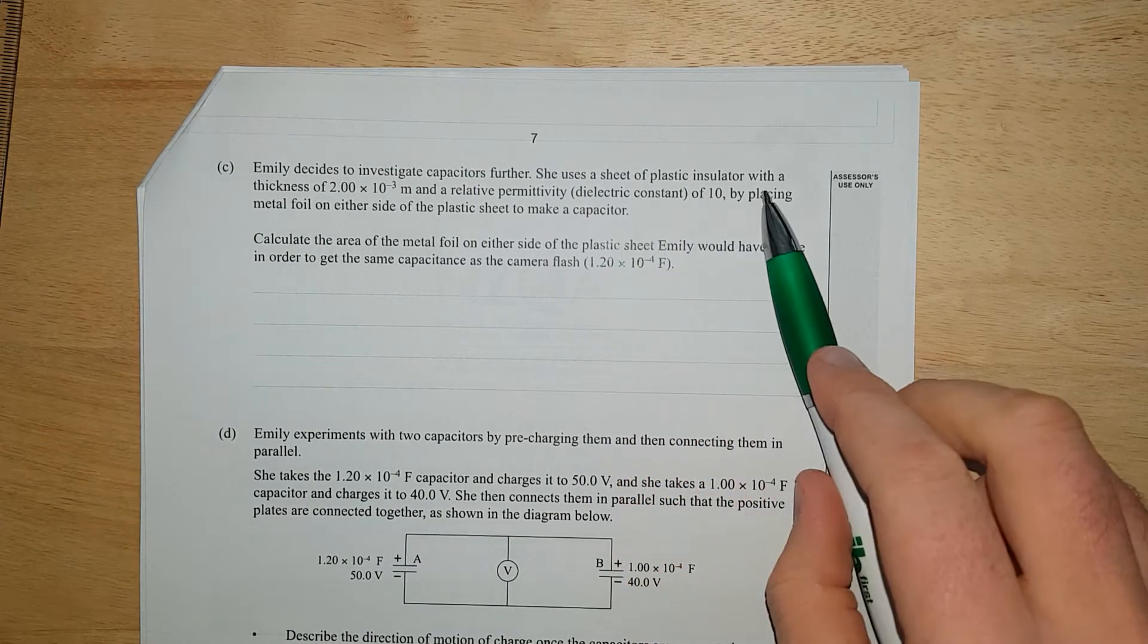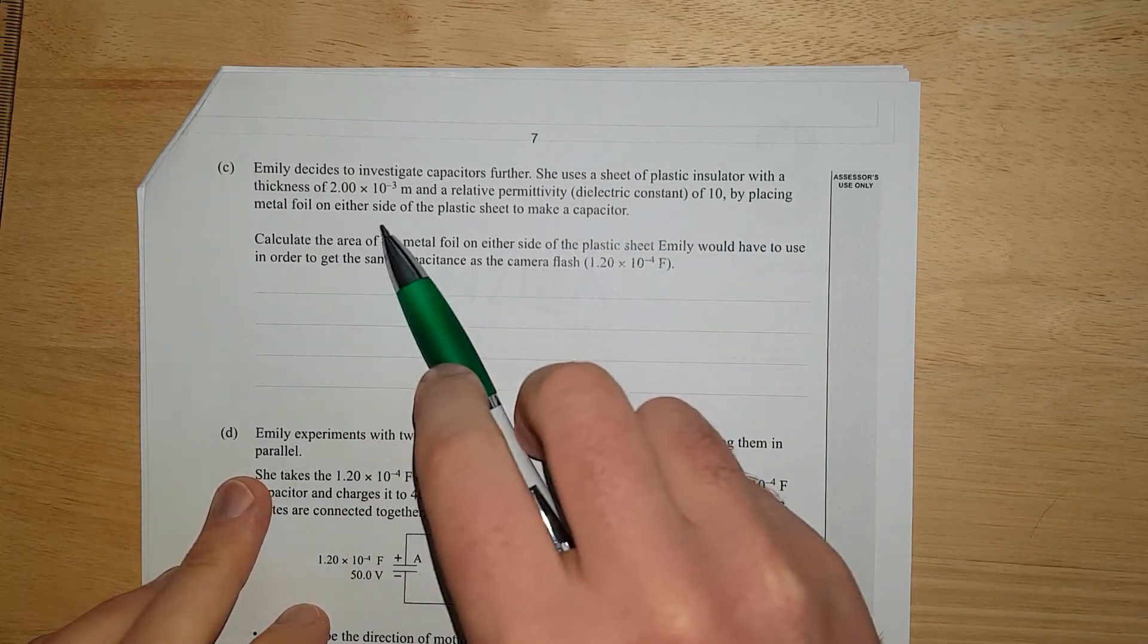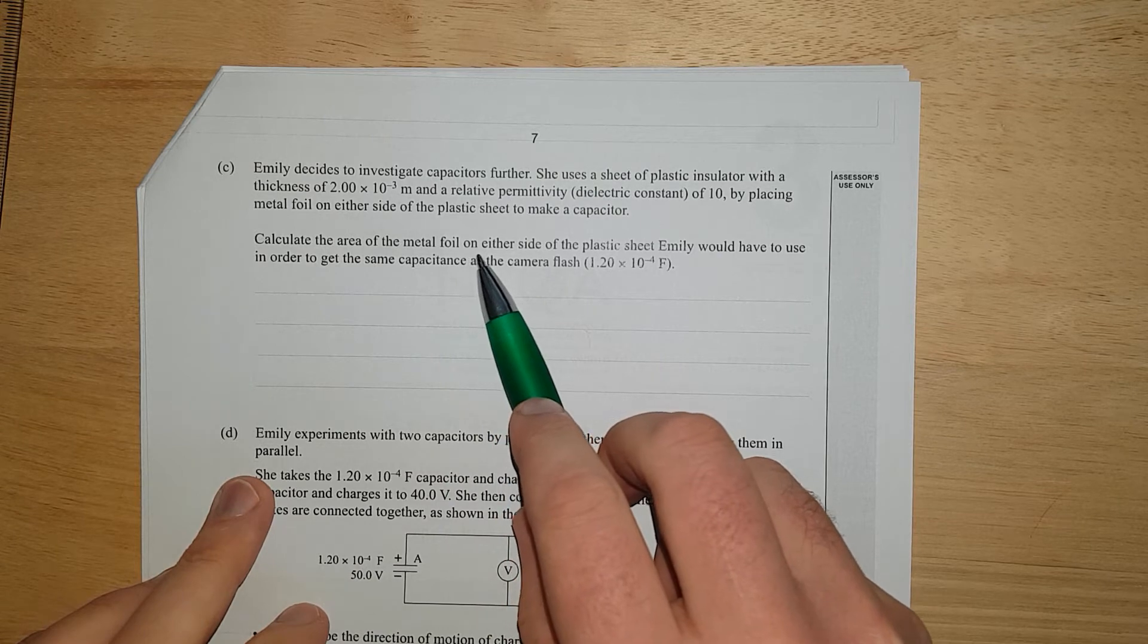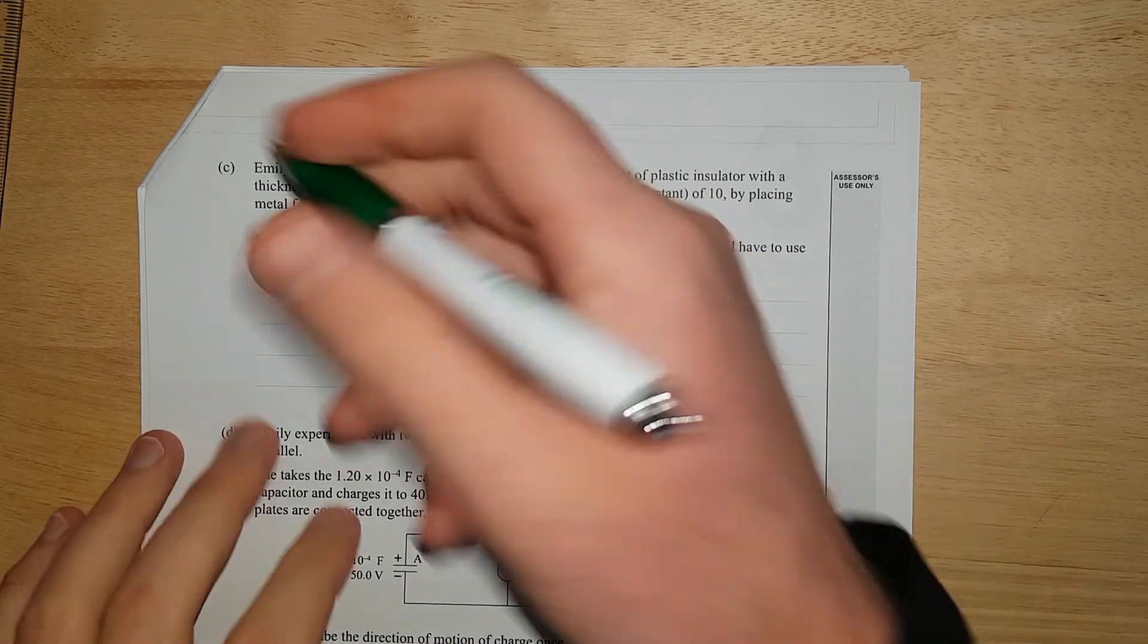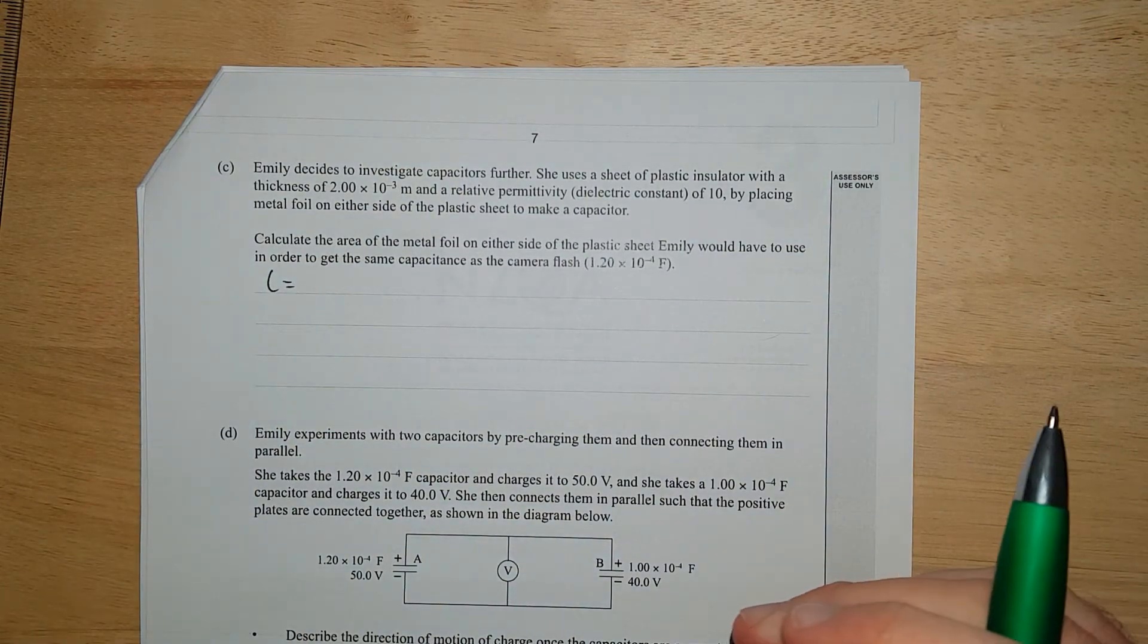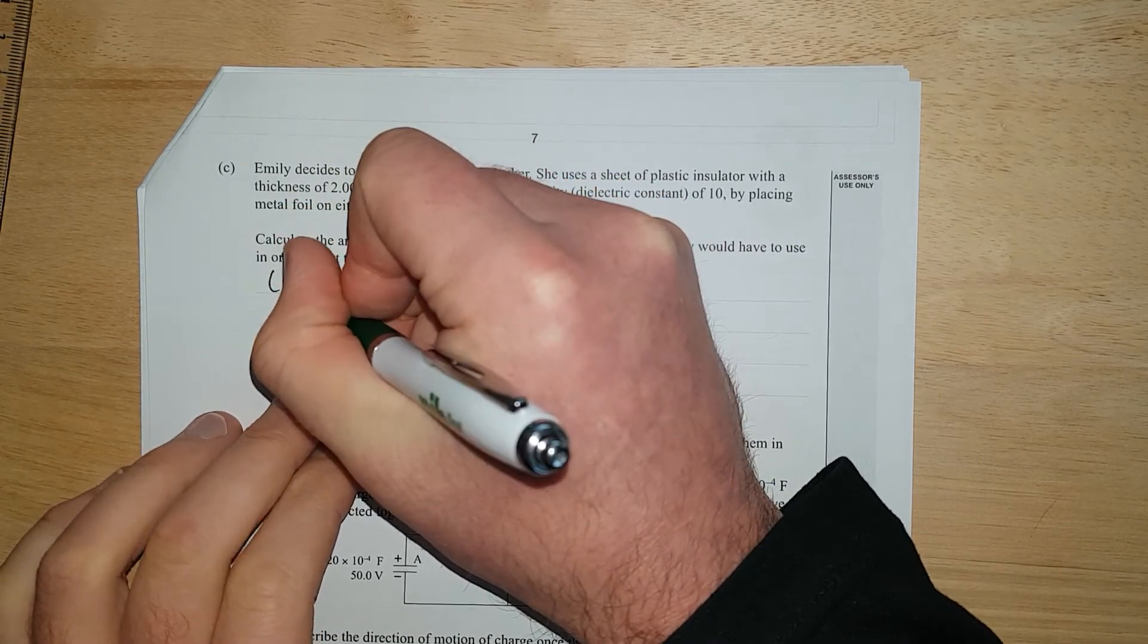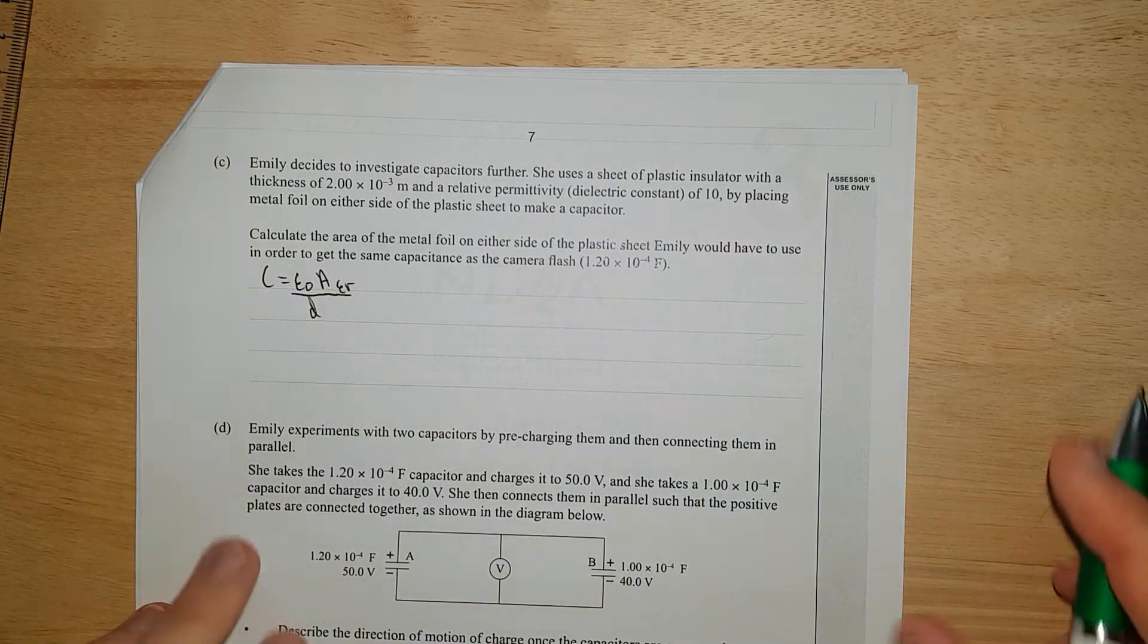Emily decides to investigate capacitors further. She uses a sheet of plastic, a dielectric. Calculate the area of the metal foil on either side of the plastic sheet Emily would have had to have used in order to get the same capacitance as the camera flash. This is just the whole formula, C equals... what is that formula? It's the permittivity of free space times the area over the distance. And then you've got a scaling factor of the dielectric constant.